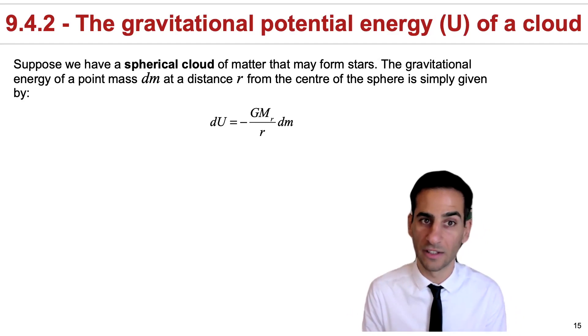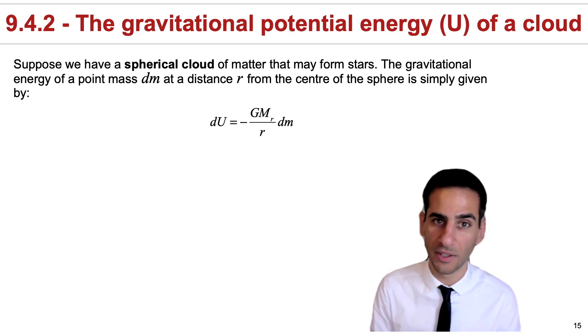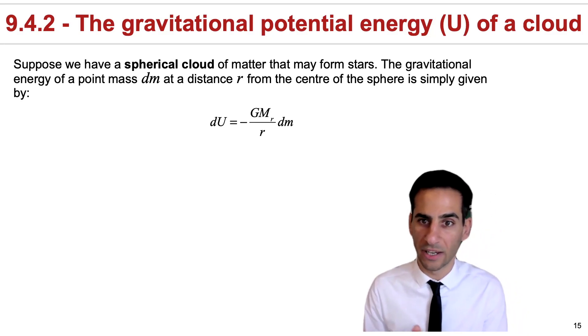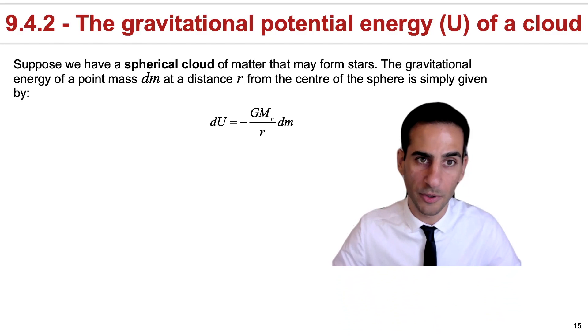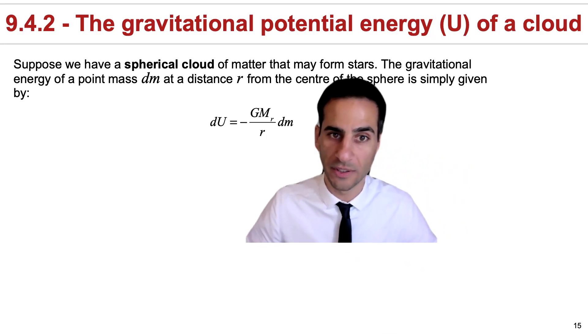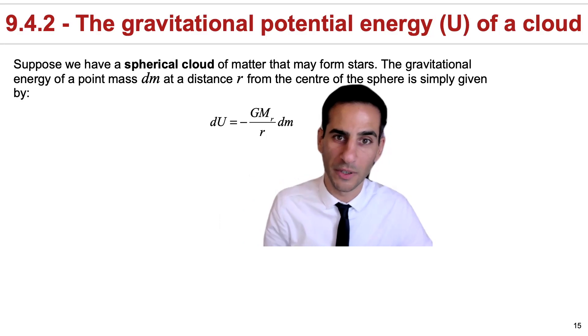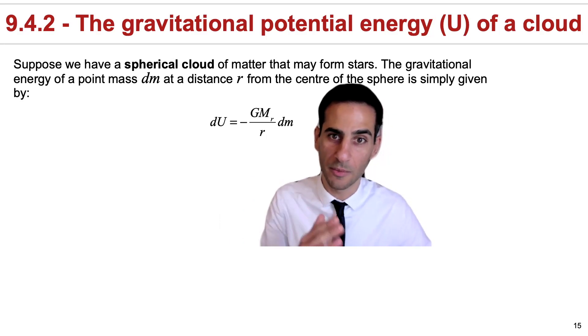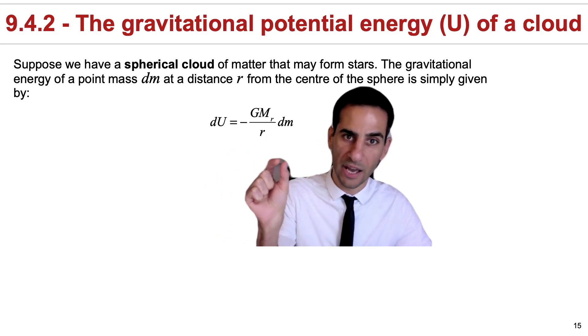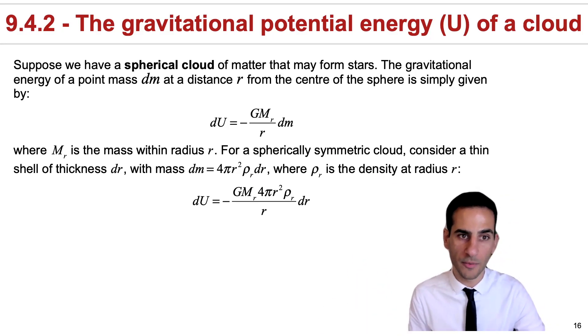Let's try to consider a very simple case. The simplest case we can think of is a spherical cloud, where we may be in a condition for stars to form. For this spherical cloud, and we'll also make other assumptions, we can actually write that the gravitational energy of a point mass dm at a given distance r from the center of the sphere can be written as dU = -GM_r/r dm, where M_r is the mass within a radius r. It's not the mass of the full cloud. It's just the mass that your particle dm will be seeing or feeling.